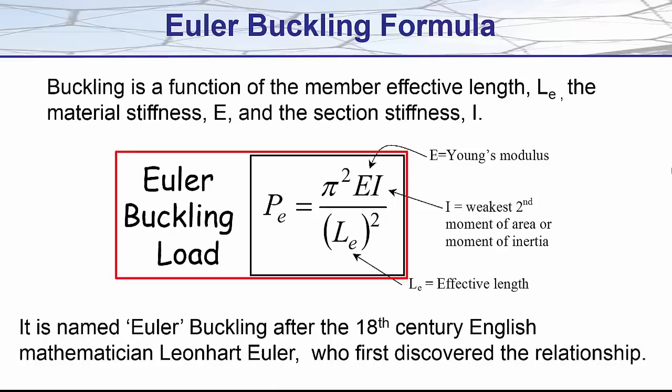The load at which a member buckles or fails is defined by the Euler buckling formula, named after Leonard Euler who first discovered there was a relationship between the compressive load a member could carry and its length. The formula here shows the load is inversely related to the member effective length squared, and for the time being we'll equate this to be equal to the actual member length.